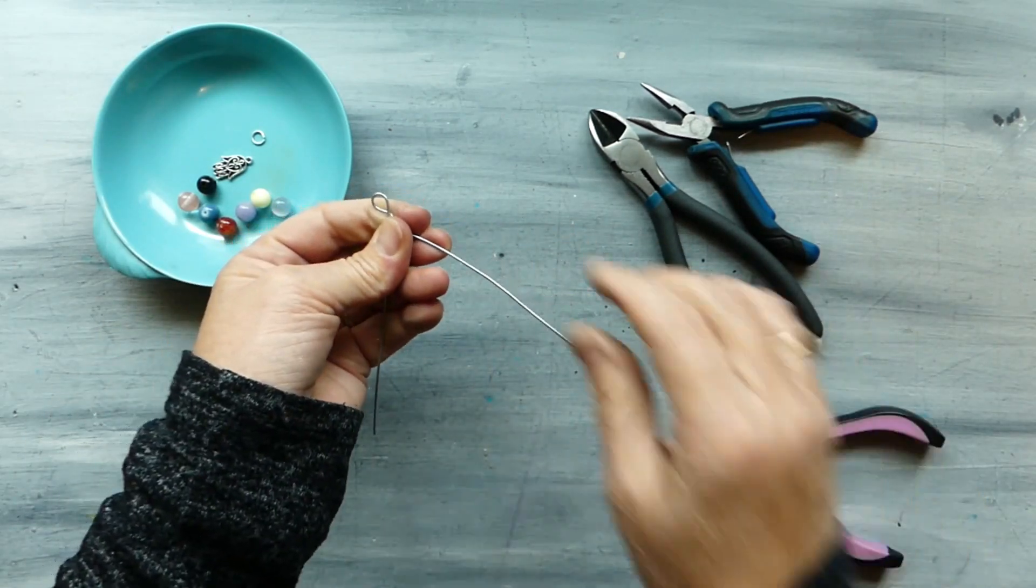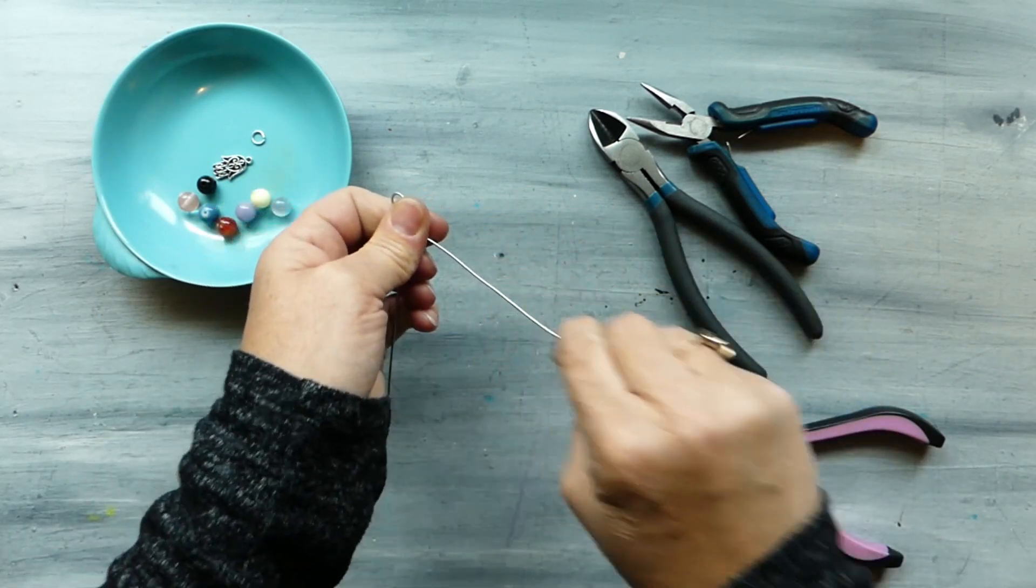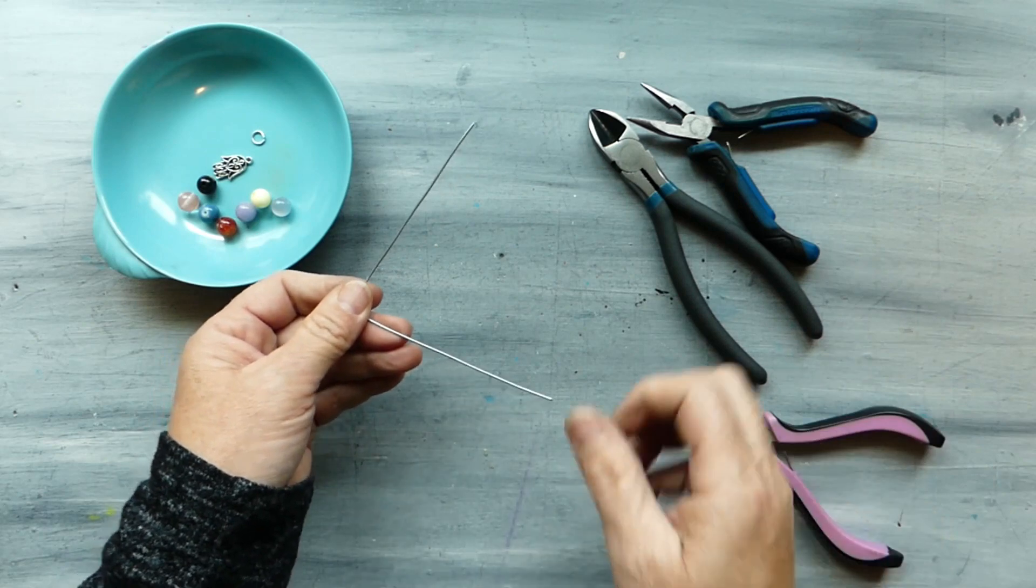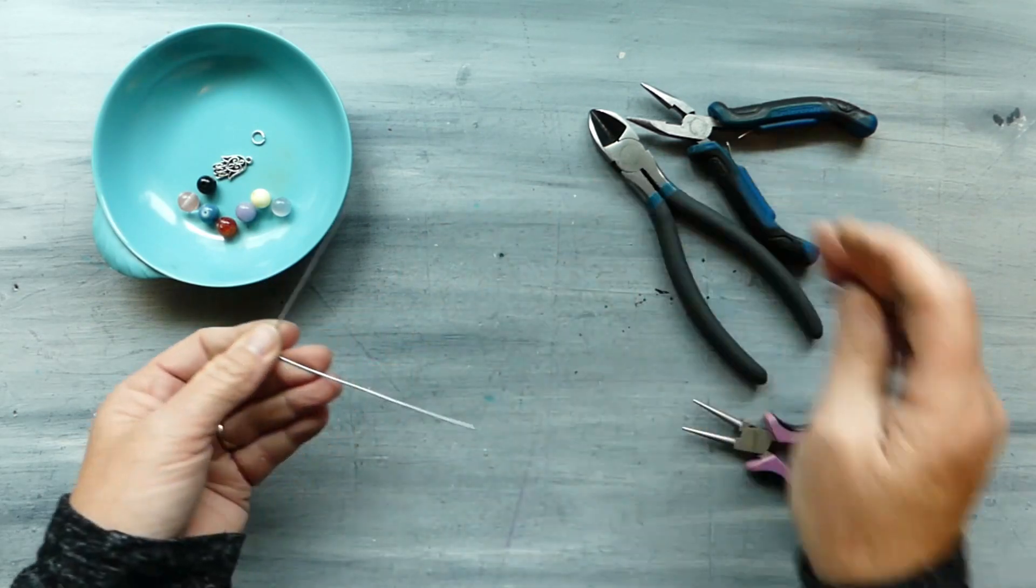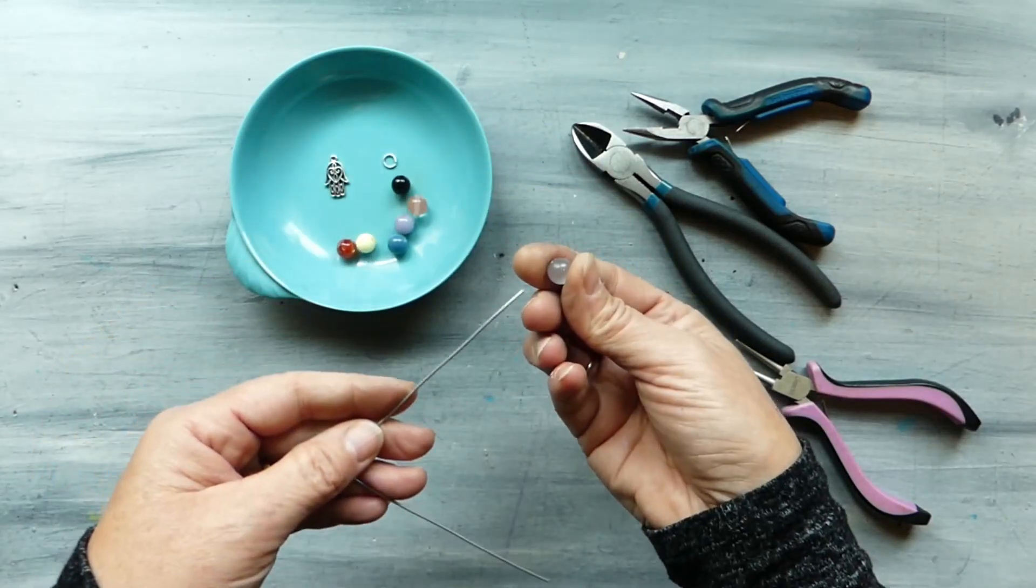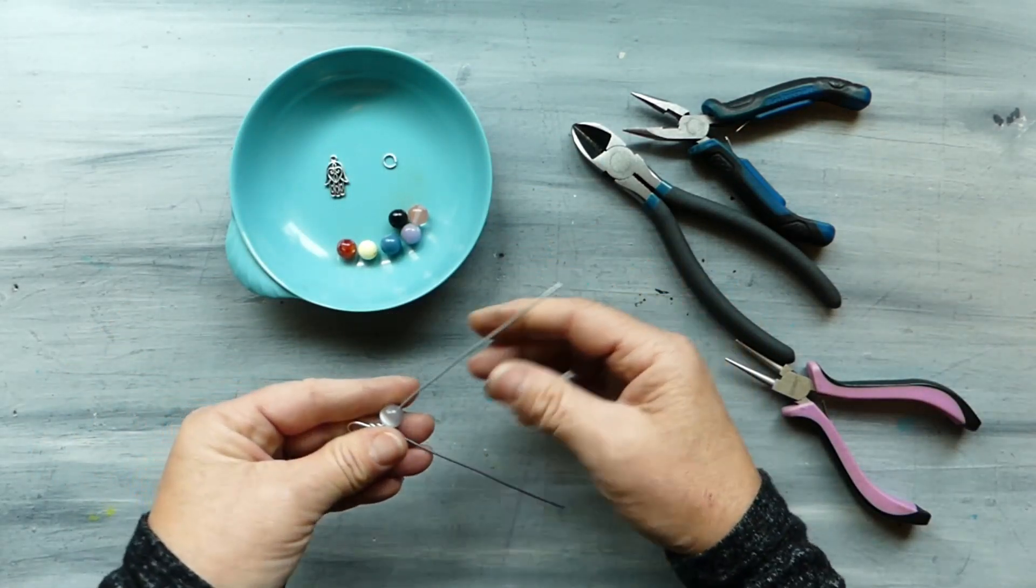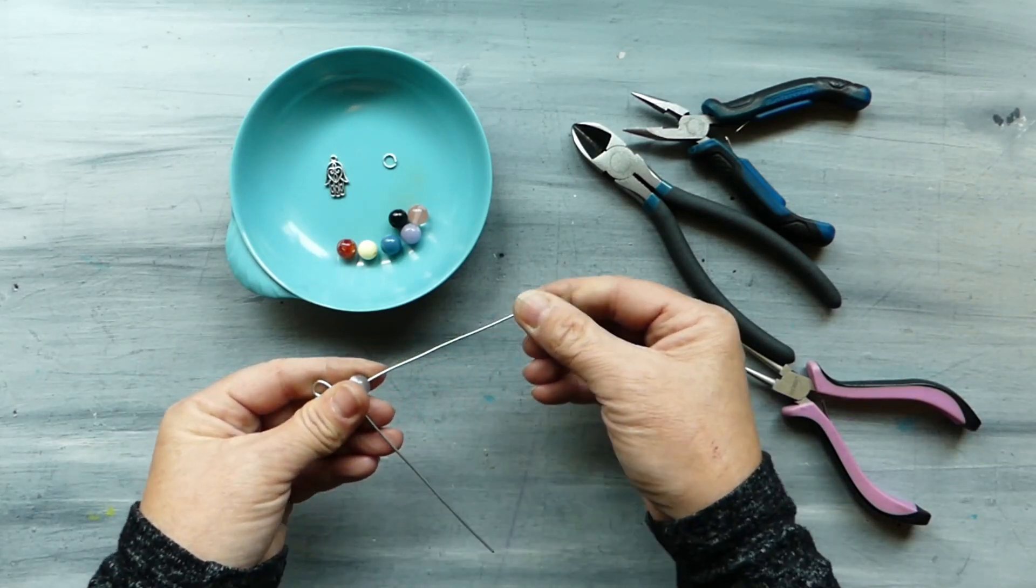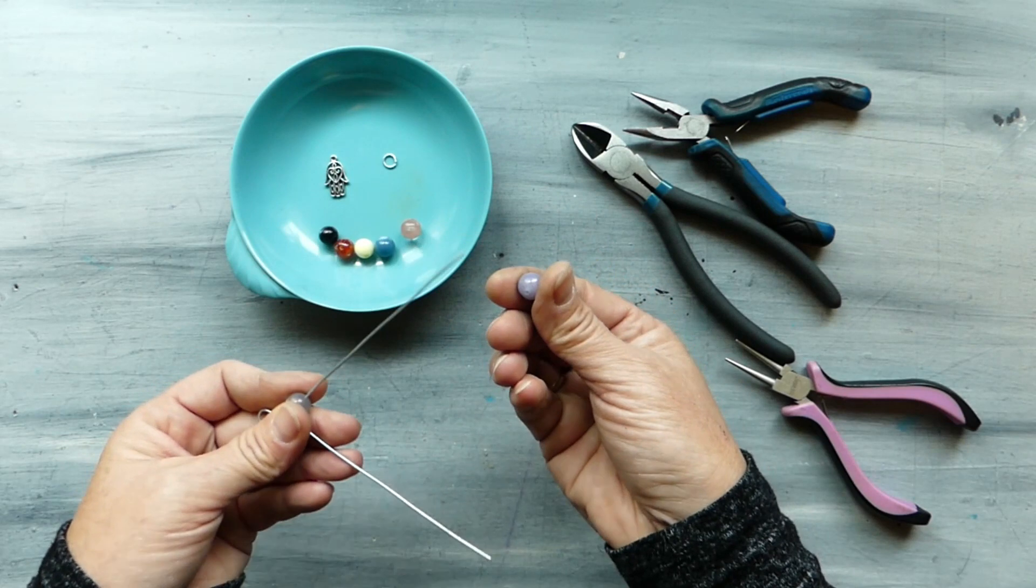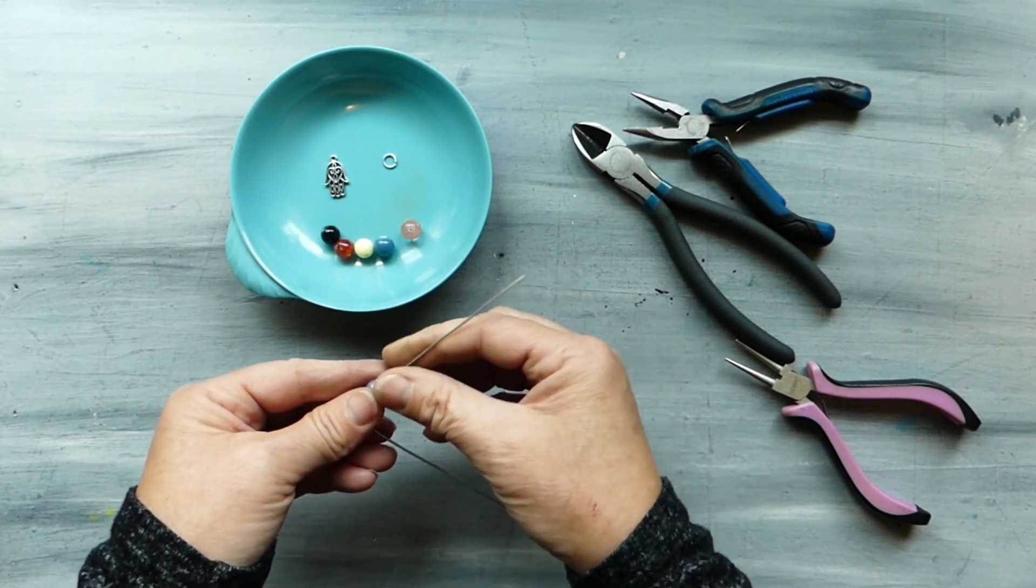And then we're going to string each bead on one of the wires. Now there is an order for these so I will do that as we string them on. So here we have got a white or clear or crystal which would represent quartz and then we would take the purple which would be representative of amethyst.